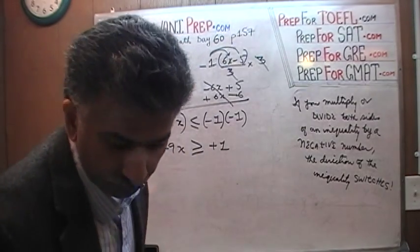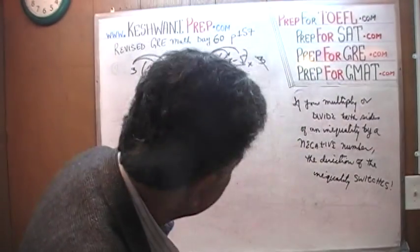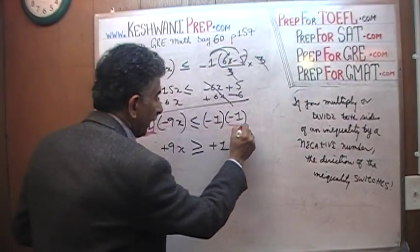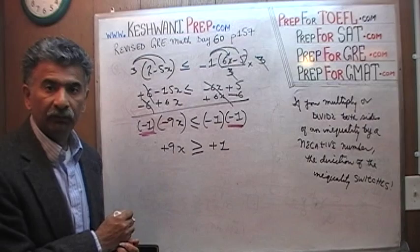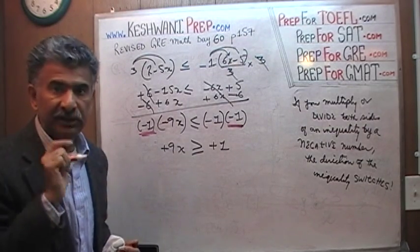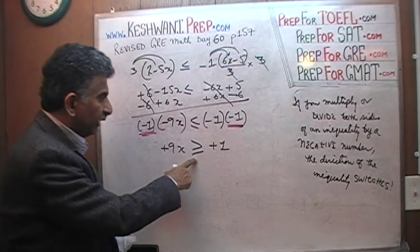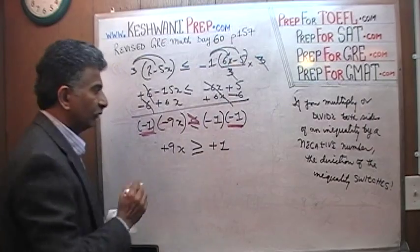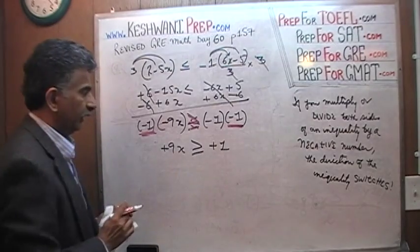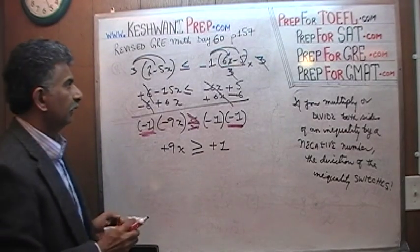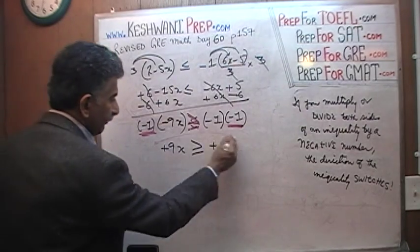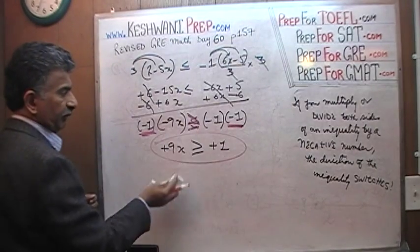Now listen carefully. The mistake I made is that the direction switch must happen as soon as you multiply both sides of the inequality by a negative number — immediately, not in the next step. I made the switch one step too late. That was my error. The answer doesn't change, of course, because I did make the switch — just in the next step instead of the previous step.